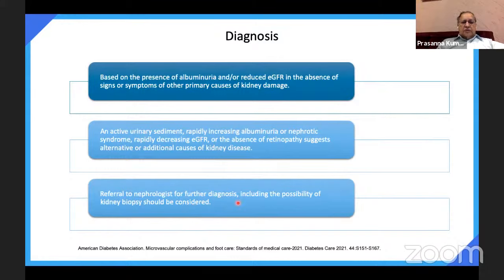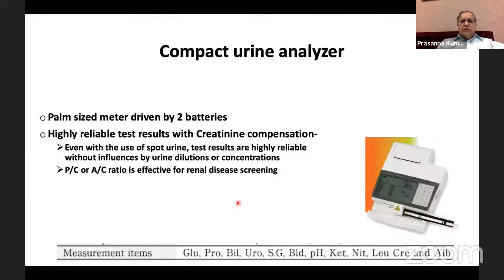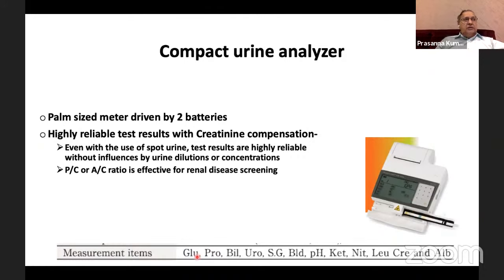Refer to nephrologist for renal biopsy if needed. In the clinic, a small handheld device — almost the size of your palm requiring two AA cells — allows you to insert a urine stick and measure glucose, protein, bilirubin, urobilinogen, pH, ketones, nitrates, leukocytes, creatinine, and albumin — all these parameters with one stick. It is a highly reliable test with creatinine comparison, and even with a spot urine sample you can perform it.